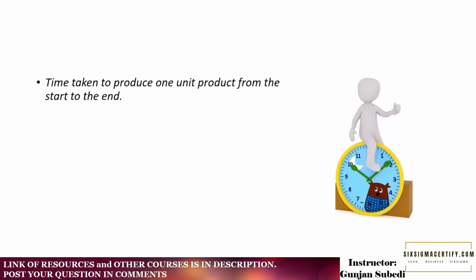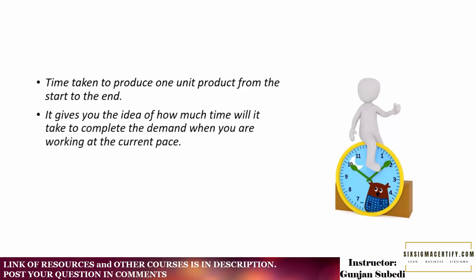Cycle time is the time taken to produce one unit product from start to end. That means from the start of the manufacturing process to the end of the process where we get the final product. It gives you the idea of how much time it will take to complete the demand when you are working at the current pace.